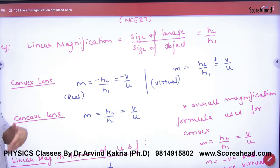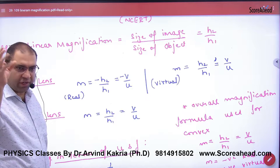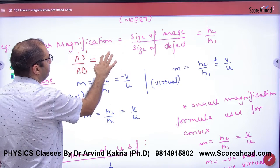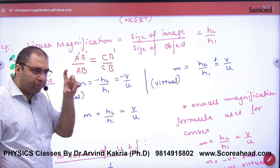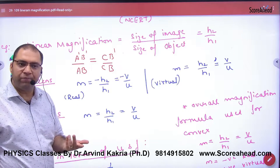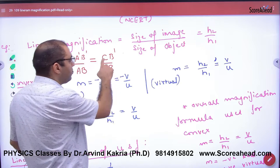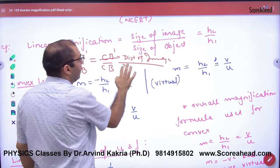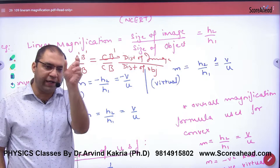When doing the derivation, we consider a triangle in the lens. In triangle A'B'C and triangle ABC, the first ratio A'B' by AB is equal to C'B' by CB. So A'B' is the height of the image and AB is the height of the object. Therefore, height of image by height of object gives us linear magnification, equal to C'B' by CB.